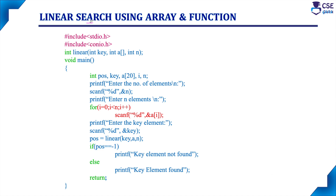What do you mean by search? If you are given an array of elements and you enter one key element to check whether it is present in the array or not, the program will search the key element in the array element by element and return whether the particular element is present or not. That is the logic of search. Here, 'linear' is the user-defined function and we are passing three parameters: the key, the array, and the number of elements in the array — that is the n value. This is the function declaration.